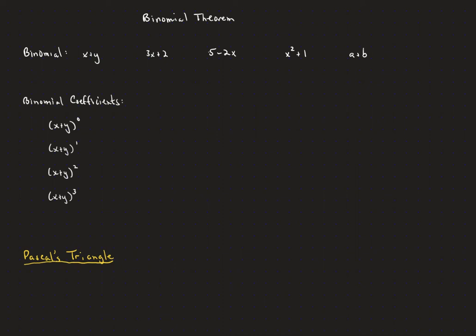In this video we're going to talk about the binomial theorem. First, let's make clear what we mean by a binomial. A binomial has two terms that can be added or subtracted together — not three terms, because that would be a trinomial, and not one term, because that would be a monomial. Something like 2x plus x is not really considered a binomial because you could just add those together and it would be a monomial.